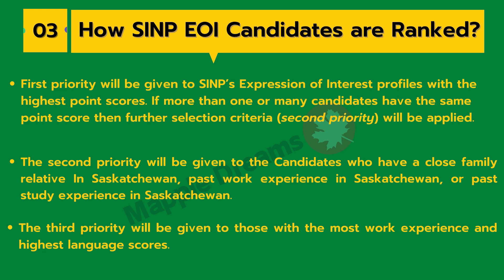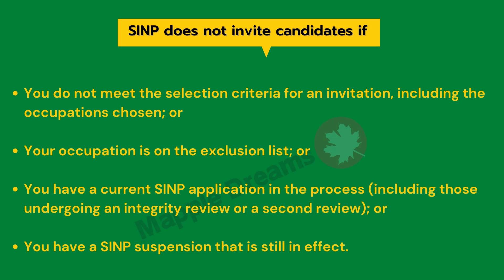After the first and second priority, the third priority is given to those with the most work experience and highest language score. SINP does not invite candidates if they do not meet the selection criteria of the invitation, including the occupation chosen or if your occupation is on the excluded list, if you have a current SINP application in process under first or second review, or if you have a SINP suspension still in effect.